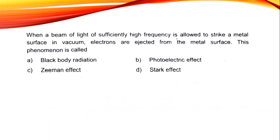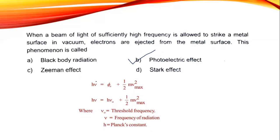When a beam of light of sufficiently high frequency is allowed to strike a metal surface in vacuum, electrons are ejected from the metal surface. This phenomenon is called photoelectric effect. Let's take a look at the equations. H nu equals phi 0 plus half mv max square. Here H nu is the energy of the incoming light, and nu is the frequency of the incoming light or radiation.